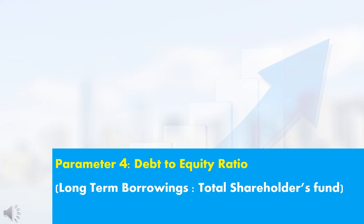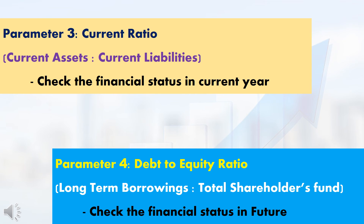Next, we are going to see the fourth parameter: Debt-to-Equity Ratio. In Debt-to-Equity Ratio, we compare long-term borrowings with total shareholders fund. If you want to check the financial status of a company in the current year, use the current ratio (current assets to current liabilities). But if you want to check the financial status for the future, use the fourth parameter — long-term borrowings to total shareholders fund — which checks the financial status of any company for the long-term.